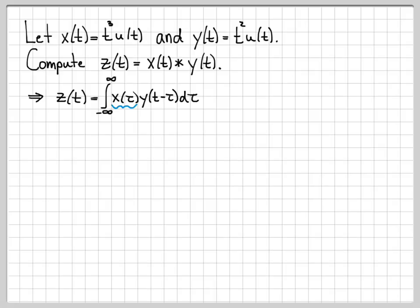The key to doing convolution is being able to sketch pictures of this integrand. So when I work a convolution problem, I always start off by sketching these individual pieces. So the first thing I ask myself is, what does x of tau look like?